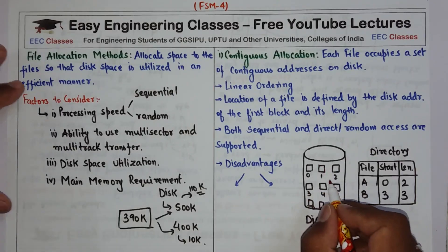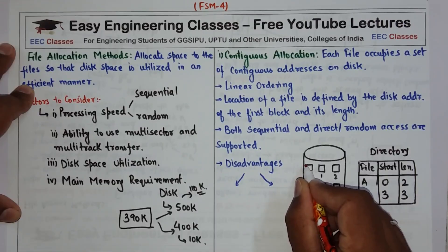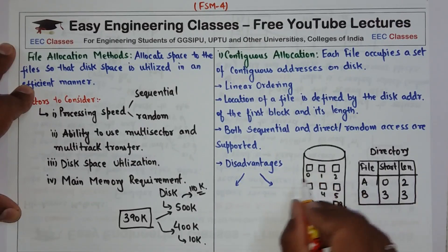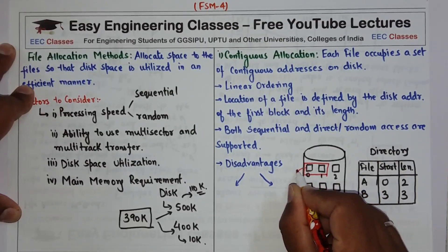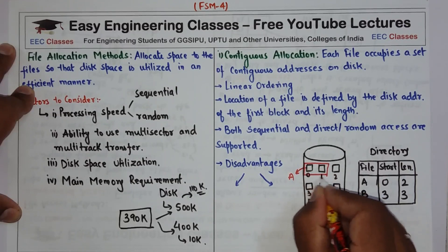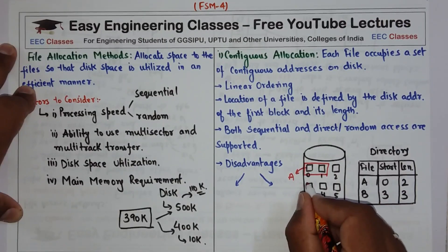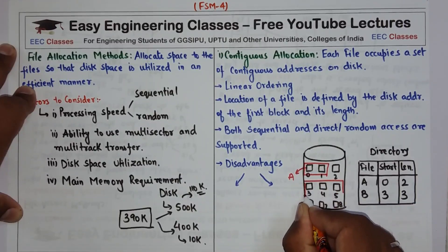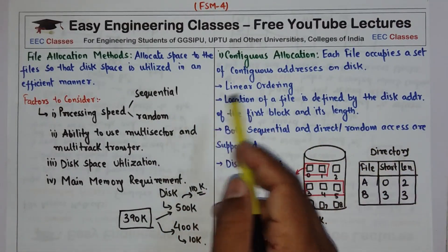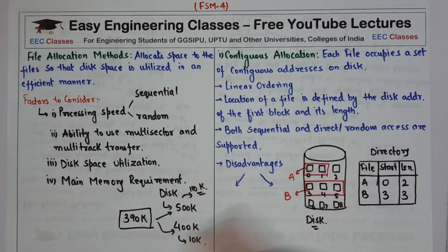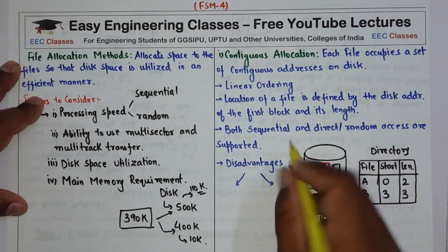If file A needs to be stored starting at block 0, file A will occupy blocks 0 through 2 — that is, contiguous blocks. Similarly, B starting from block 3 goes up to 3 blocks of length. In contiguous allocation, linear ordering is used and the location of the file is determined by the disk address of the first block and its length.